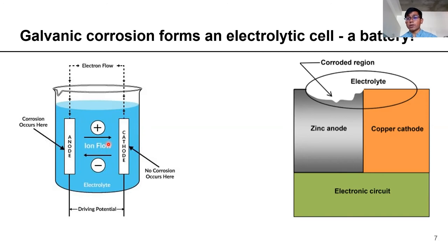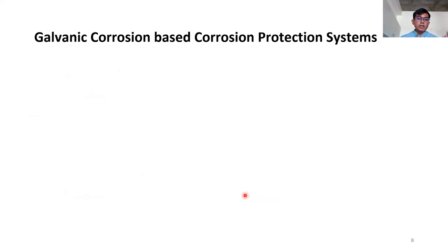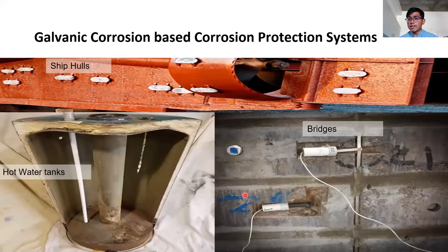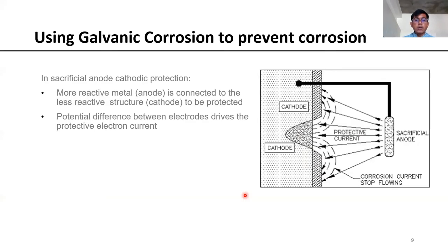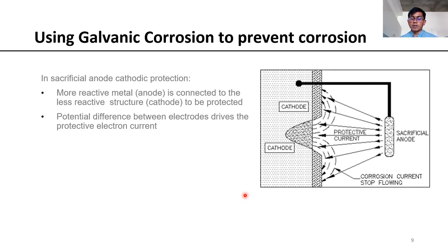Galvanic corrosion is quite commonly employed in a controlled manner as the basis for corrosion protection systems, also known as sacrificial or cathodic protection systems. These systems are everywhere — in houses in hot water tanks, on ships, in bridges — essentially in every infrastructure we want to protect. To understand how they work: the structure you want to protect undergoes corrosion, and the protection system connects a more reactive metal — the sacrificial anode — to that structure. The sacrificial anode undergoes corrosion itself to protect the initial structure, providing a protective current and electron flow to prevent corrosion.